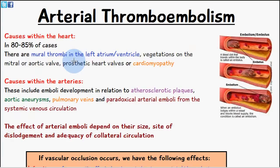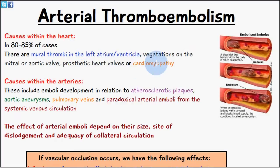Welcome to Five Minute School. In today's video we're going to be talking about arterial thromboembolisms. In 80 to 85 percent of cases the initial cause is within the heart, so we have mural thrombi in the left atrium or ventricle, or vegetations on the mitral or aortic valve, or in the case of a prosthetic heart valve.